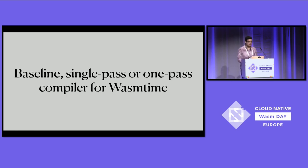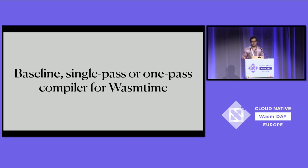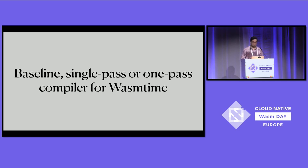Winch is a baseline single-pass, or one-pass, compiler built exclusively for WasmTime. I say this because WasmTime already has a compiler — CraneLift — which is an optimizing compiler. These types of compilers work to make your code the most efficient code at runtime. They do a lot of work ahead of time at startup so that you can get good performance. But what the literature says about baseline compilers is that they pass through their compilation unit parts exactly once and immediately emit machine code.